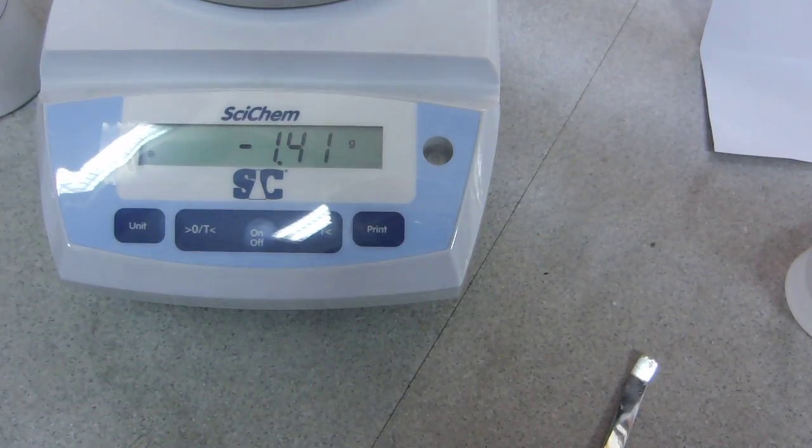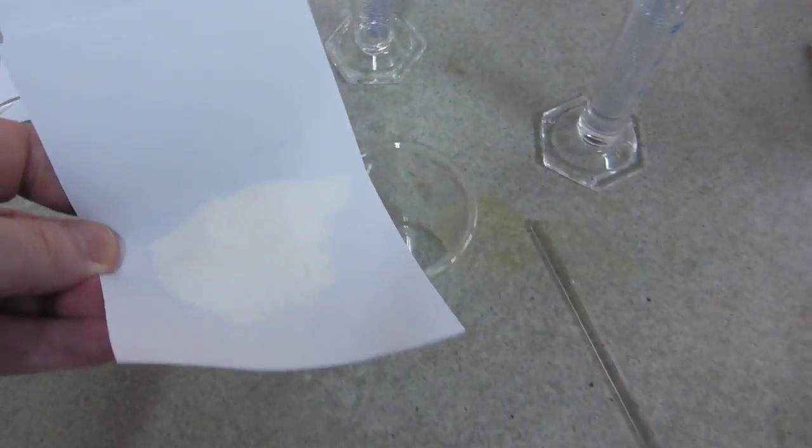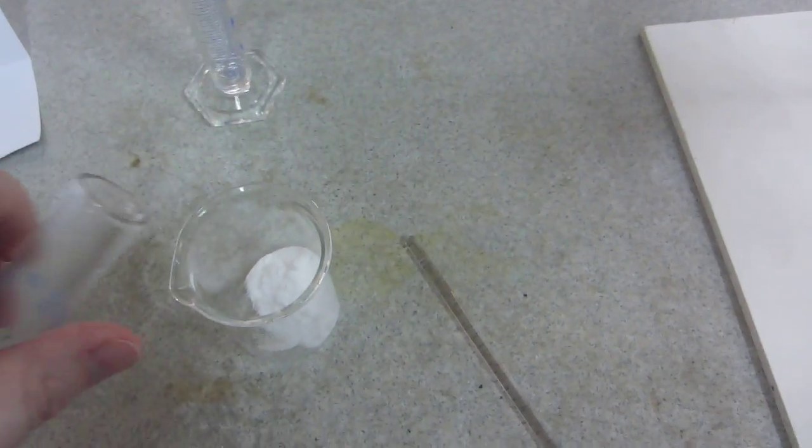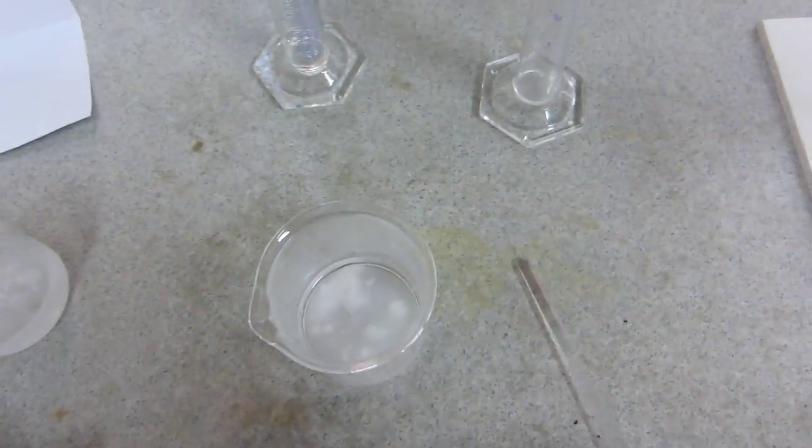Well, if we take a second portion of glucose, again 10 grams of anhydrous glucose, and this time add hot water, commence stirring.